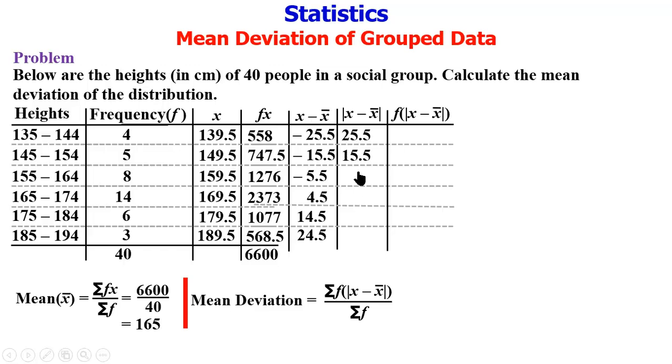So we go to the last column - frequency multiplied by absolute value of x minus x̄. So 4 times 25.5 gives 102. 5 times 15.5 gives 77.5. 8 times 5.5 gives 44. 14 times 4.5 gives 63. 6 times 14.5 gives 87. And 3 times 24.5 gives 73.5.